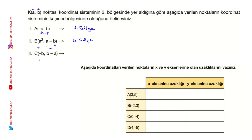Eksi B: B zaten pozitif olduğu için burası pozitif. B'ye 2 demiştik; 2 eksi (-1) = 3 olur, dolayısıyla artı olacak. Artı virgül artı da birinci bölge olarak bulunacaktır.